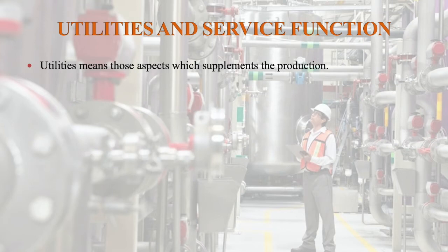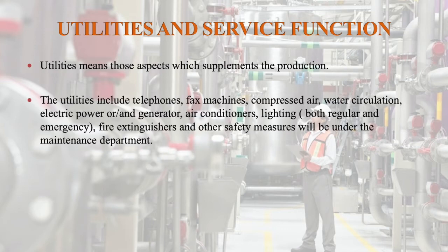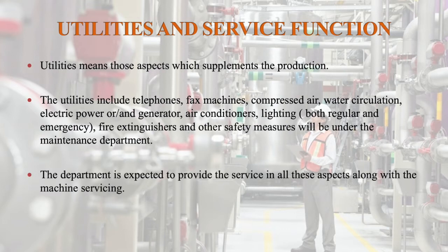Utilities and service function. Utilities are aspects which supplement production. The utilities include telephones, fax machines, compressed air, water circulation, electric power, generator, air conditioners, lighting, fire extinguishers, and other safety measures — all under the maintenance department. The department is expected to provide service in all these aspects along with machine servicing. Utilities are not directly related to production — they include lighting, compressed air supply, and water circulation systems in the industry, and all these come under the utilities and service function.